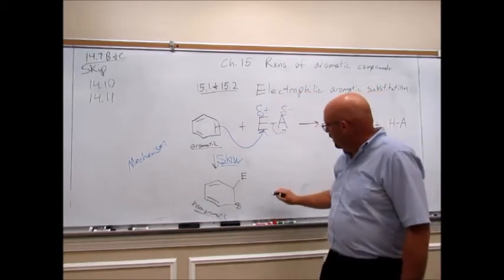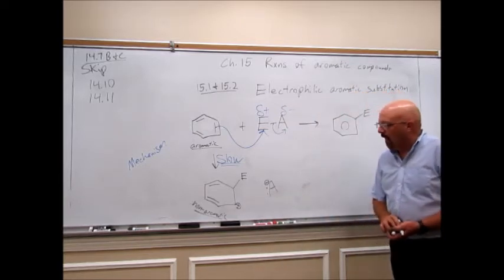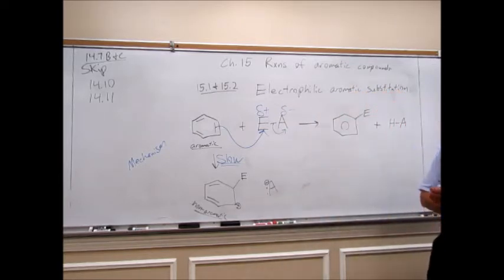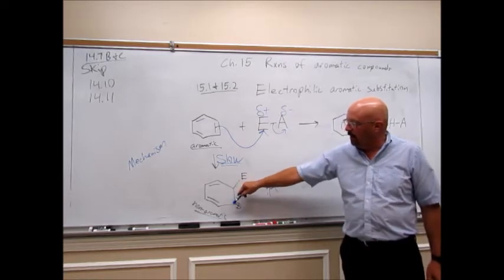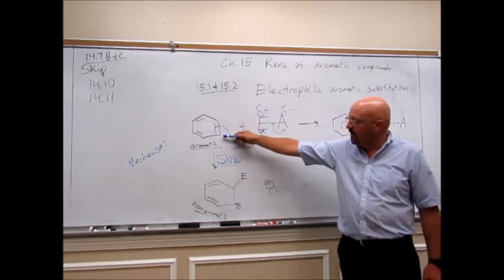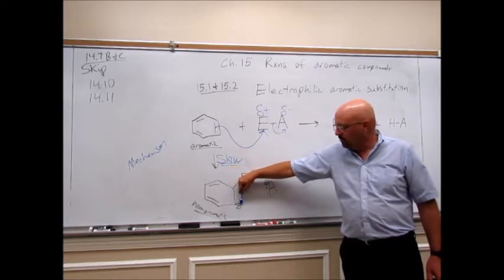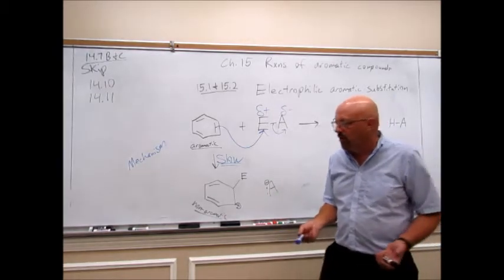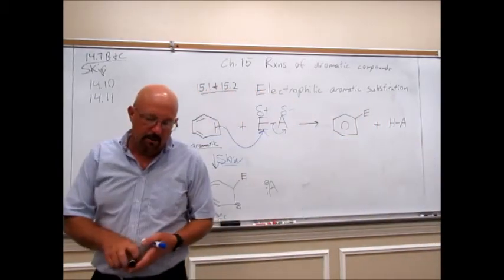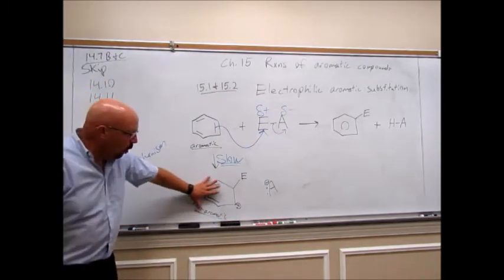We kicked the electrons onto A, so we have an anion. To get back to the aromatic ring — even though this intermediate is less stable and non-aromatic — it's not so bad because we do have a lot of resonance. That plus charge has resonance with the double bonds, so there is resonance to stabilize that plus charge, but it's still not as stable as an aromatic ring.